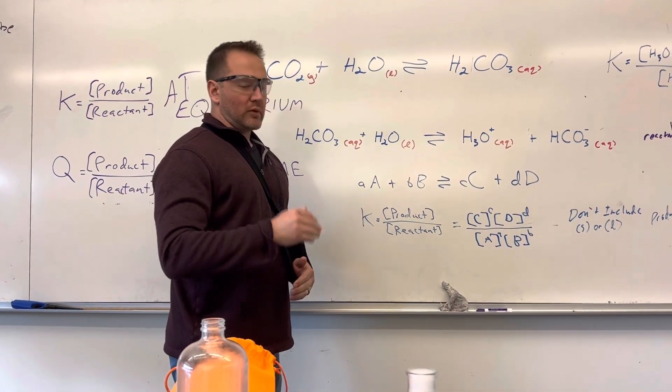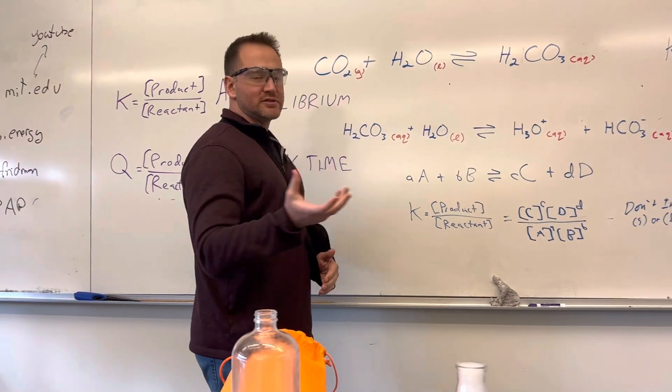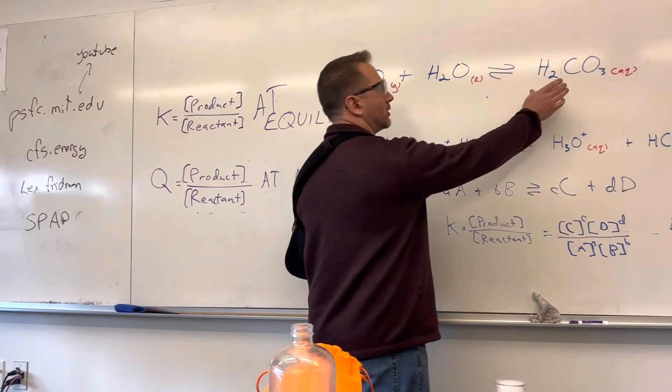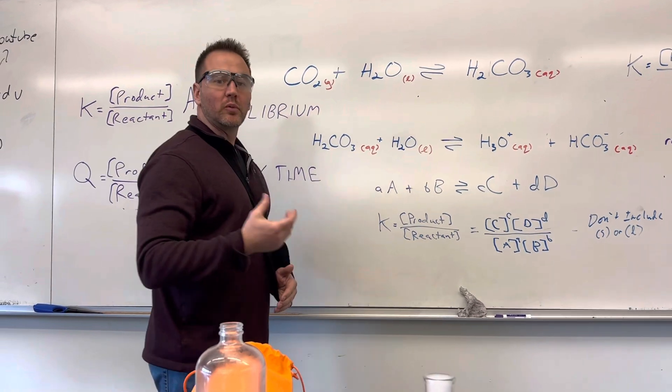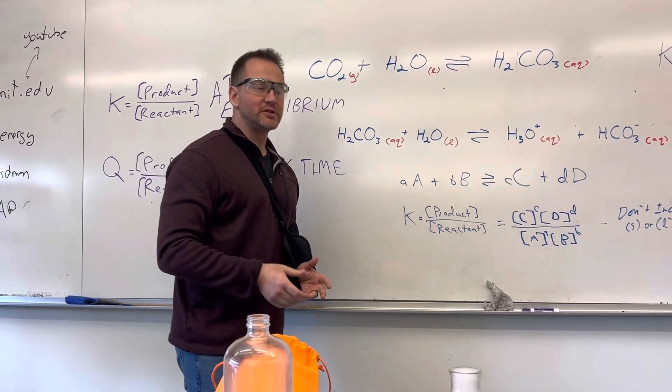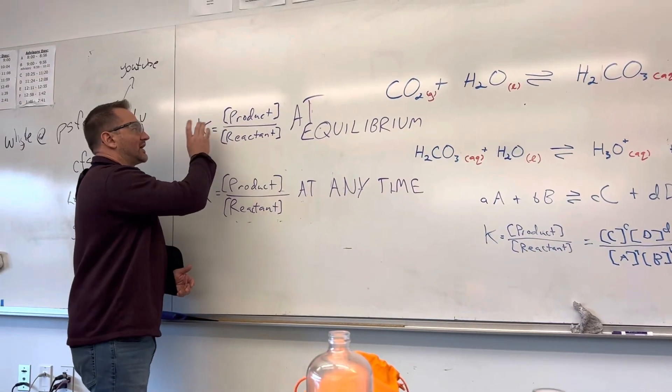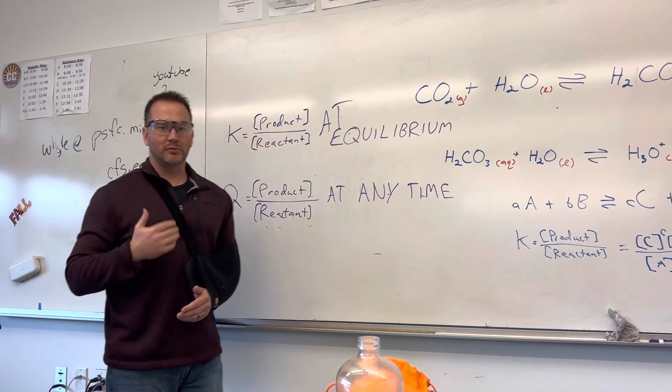So right now we have a high concentration of CO2, so we formed a good amount of carbonic acid. And what we'll learn about when we write equilibrium expressions, we'll see that we have a K value which represents the equilibrium constant.